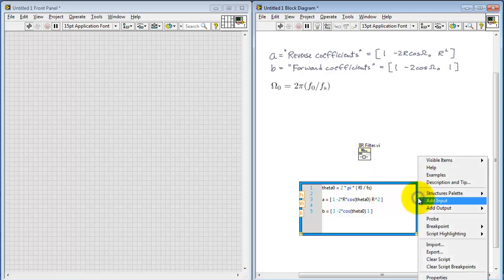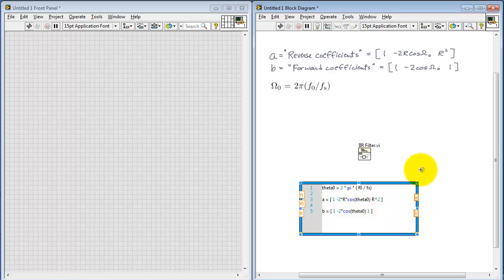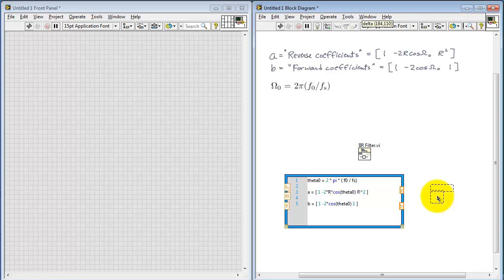Now we see the forward and reverse inputs on the IIR filter. Let me add two outputs, one for A and one for B. I will then connect my reverse coefficients to A and the forward coefficients to B. And the filter is ready to go.